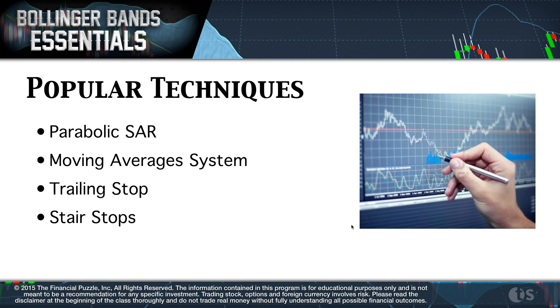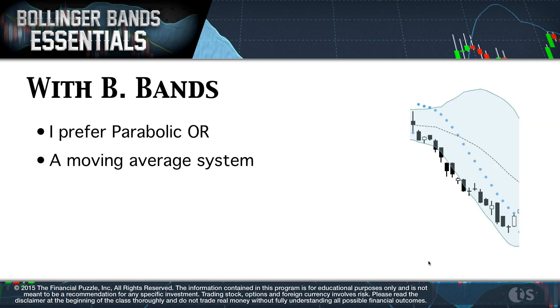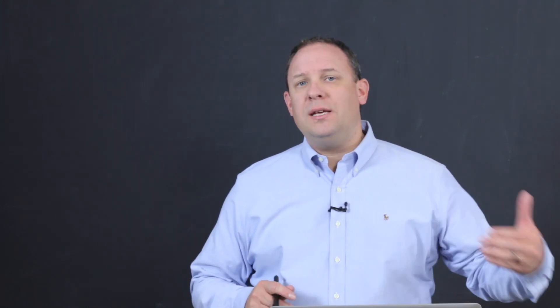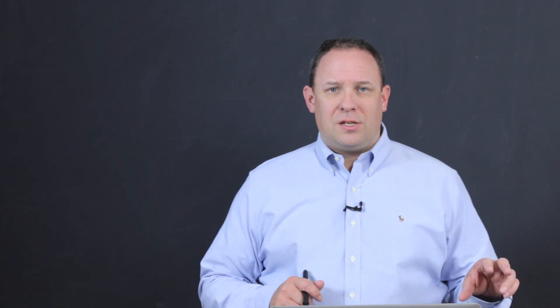The moving average system is a popular system. A trailing stop is a popular system — I'm not a huge fan of it, but it is popular. A system known as stair stops is another decently popular system that was kind of popularized back in the 1930s. With the Bollinger Bands, the system I really like is parabolic. I prefer the parabolic or a moving average system.